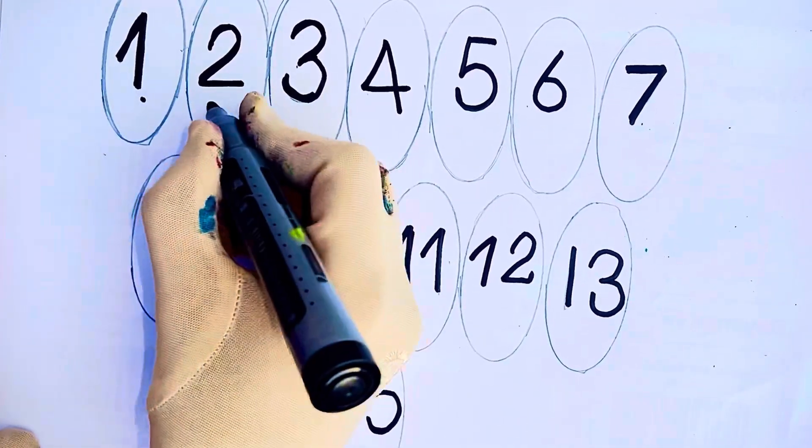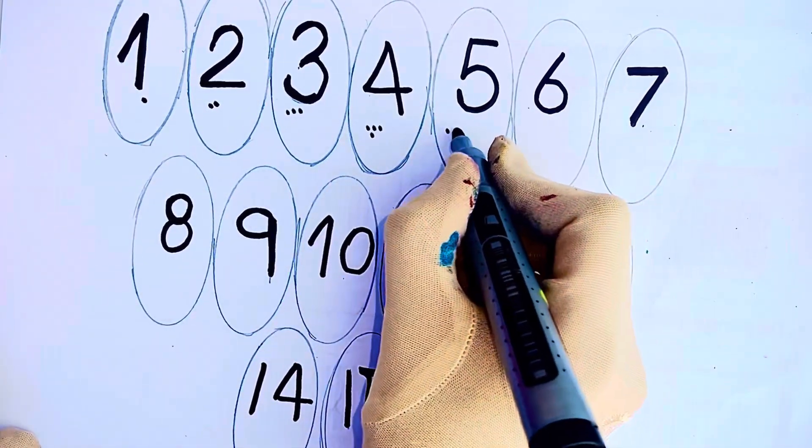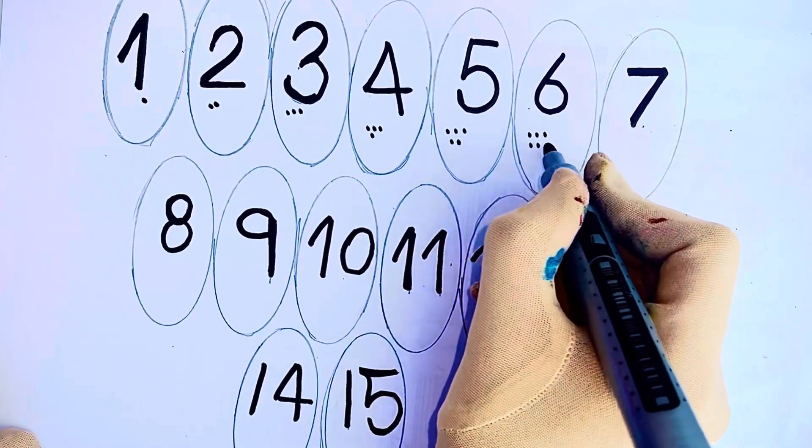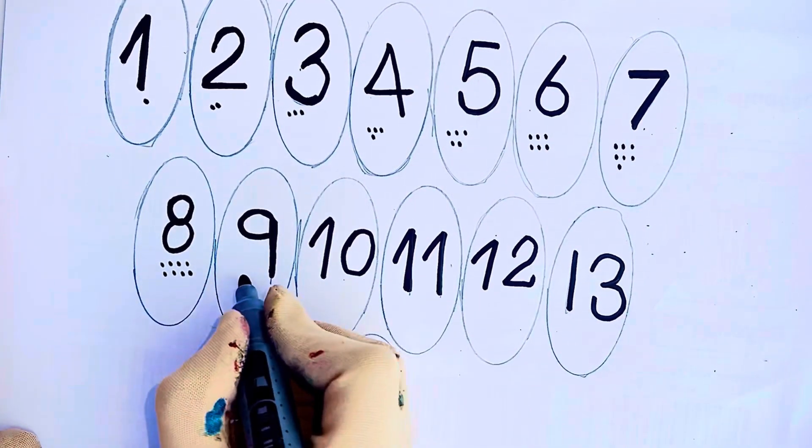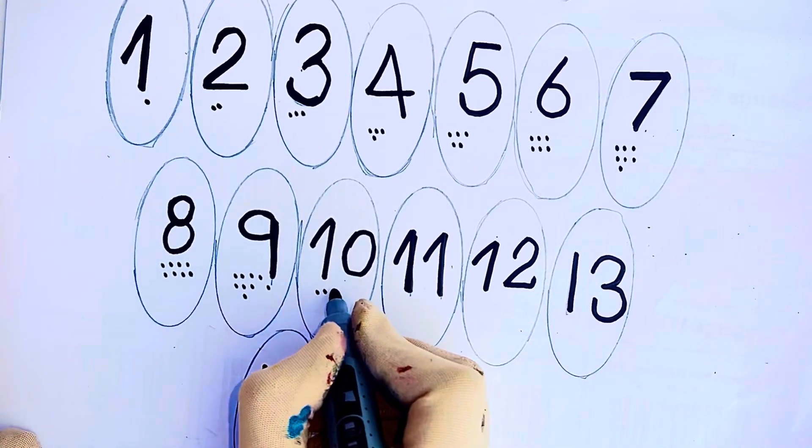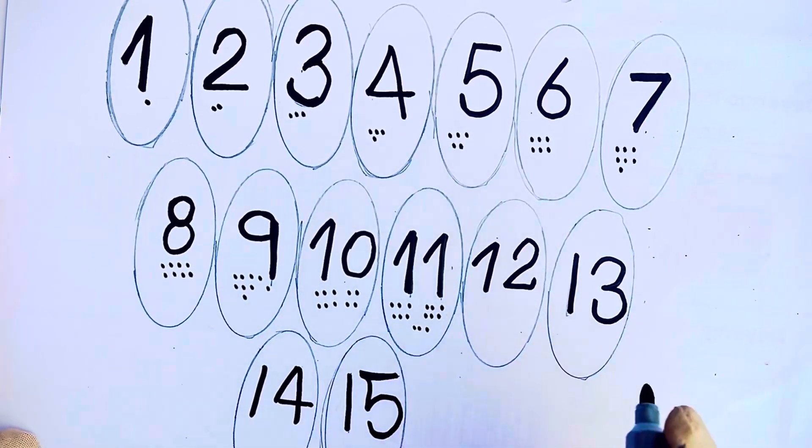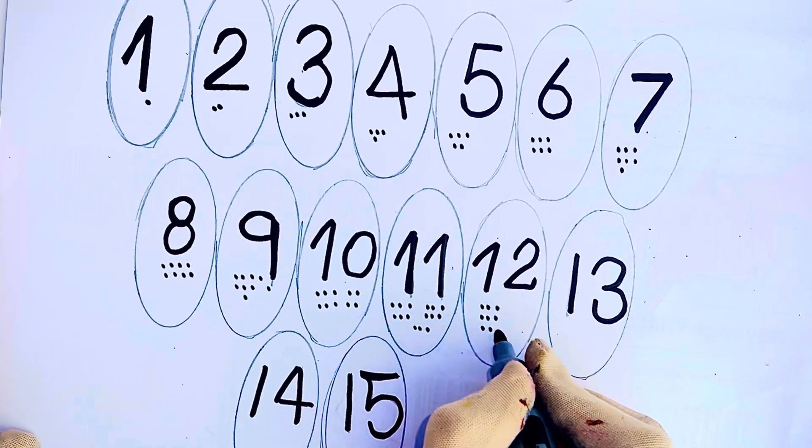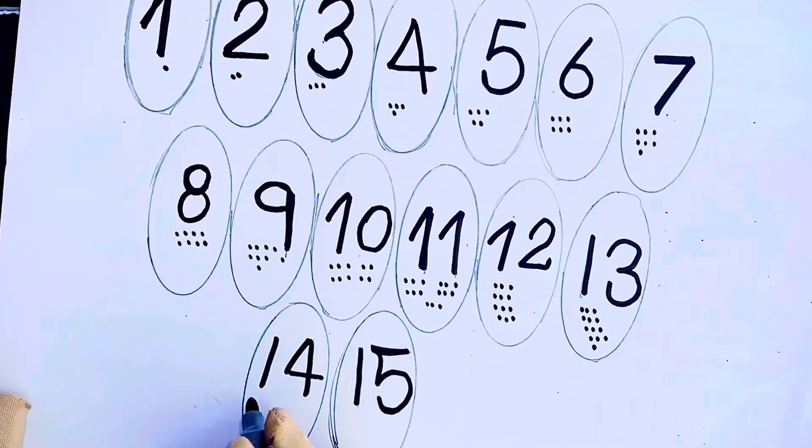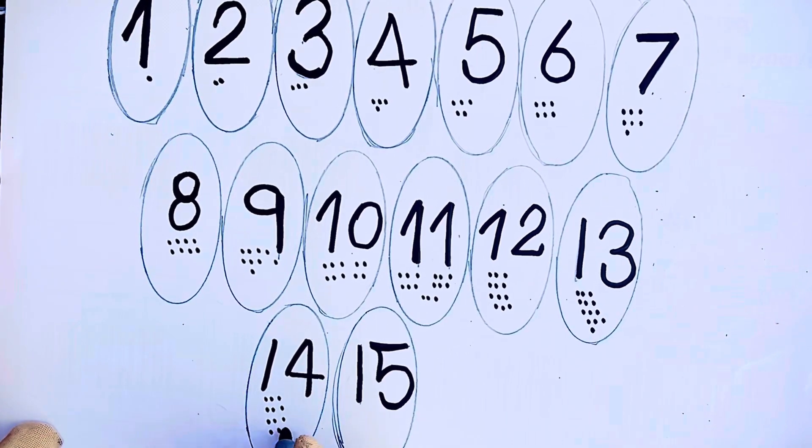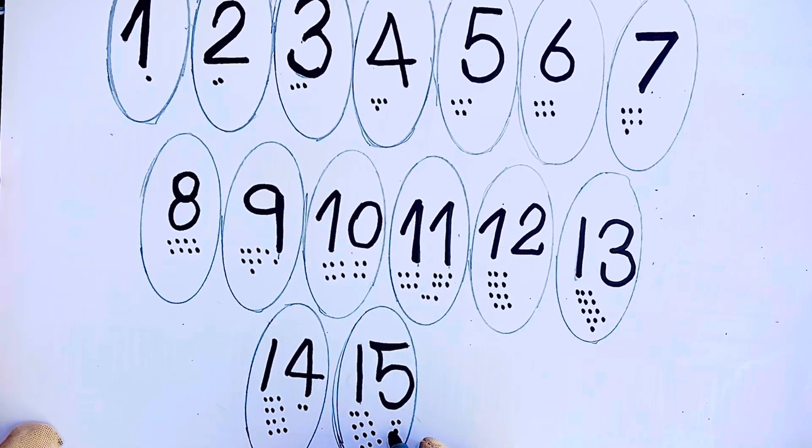Let's review: 2, 3, 4, 5, 6, 7, 10, 9, 10, 11, 12, 13, 14, 15.